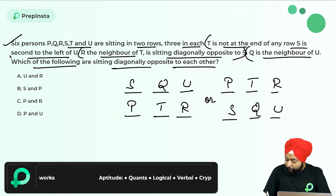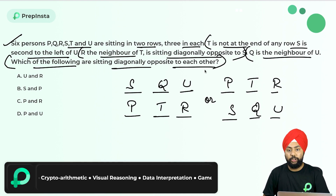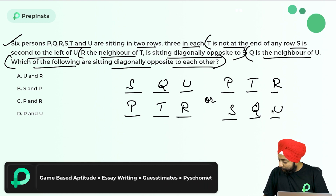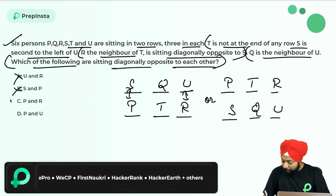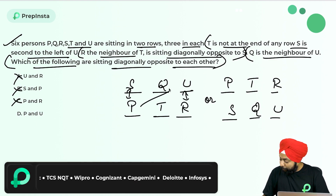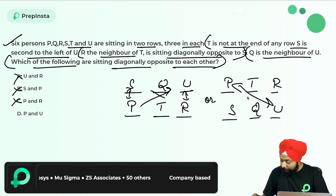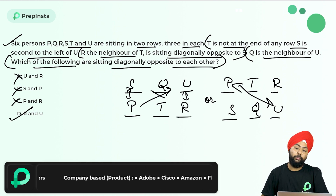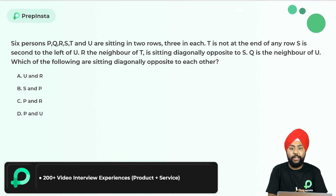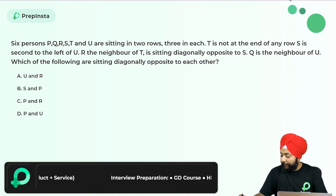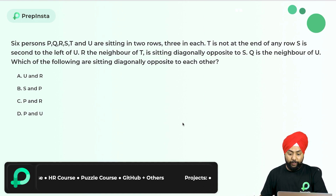Now R is the neighbor of T and sitting diagonally opposite to S, so R will be here, and R is the neighbor of T, so R and T will be here. Q is the neighbor of U, so Q will be here. The only person left is P. These are the two possibilities. Now which are sitting diagonally opposite? P and U are diagonally opposite in both cases, so the answer is option D.